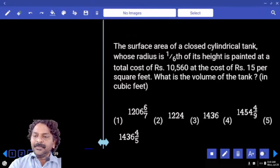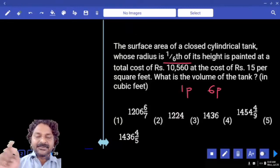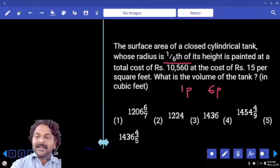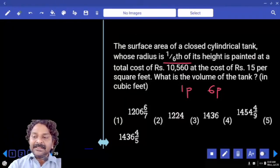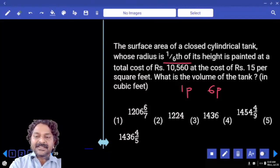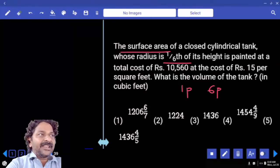So now if the height is six parts, the radius is one-sixth which is one part only, and they said for painting, painting is done for the surface area only. What do you mean by surface area?